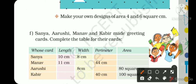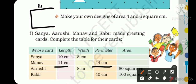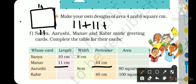Now for Manav, the length of the rectangle is 11 cm, but its width is not given — only the perimeter is given directly. Since opposite sides of a rectangle are equal, both lengths are 11 cm and 11 cm. We write 11 cm and 11 cm for the two length sides.